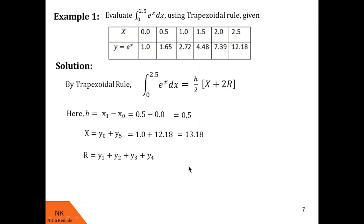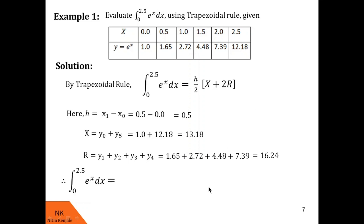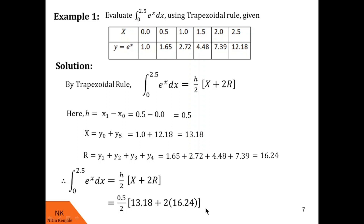Capital R is the sum of remaining ordinates: y1 plus y2 plus y3 plus y4. When we add them together, R equals 16.24. Substituting these values into the trapezoidal rule, the integral of e^x dx over the limit 0 to 2.5 is 0.5/2 into 13.18 plus 2 times 16.24. When we simplify this, the answer is 11.415. I hope you understood how we use the trapezoidal rule to evaluate this integral over the limit 0 to 2.5.